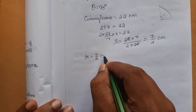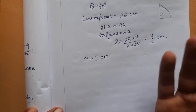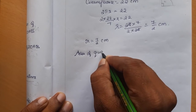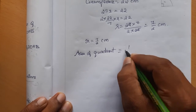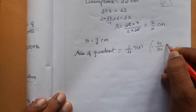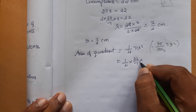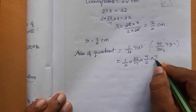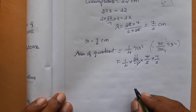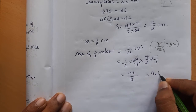Radius = 7/2 cm. Area of the quadrant = (1/4) × πr², or equivalently (90/360) × πr². So: (1/4) × (22/7) × (7/2) × (7/2) = (1/4) × (22/7) × (49/4). Simplifying: 22 × 7 divided by 8 = 77/8 ≈ 9.625 ≈ 9.6 cm². The area of the quadrant is approximately 9.6 cm².